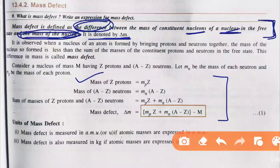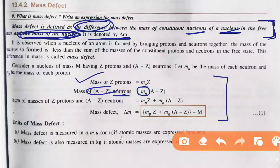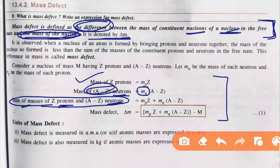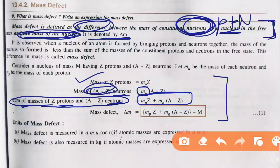The definition gives us: mass of Z protons is mp × Z, where mp means mass of proton and Z is the number of protons. Then (A minus Z) for neutrons. Nucleon means proton plus neutron, and for mass defect we subtract the mass of the nucleus — so Δm = Z·mp + (A-Z)·mn − M(nucleus).